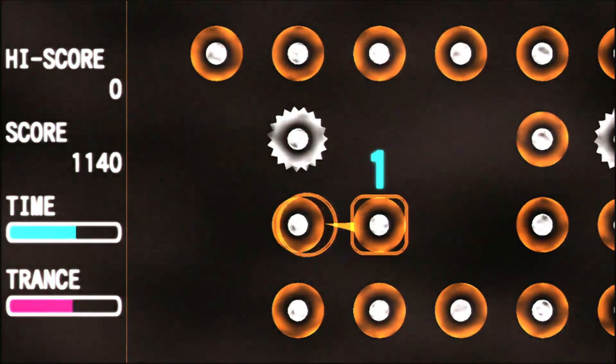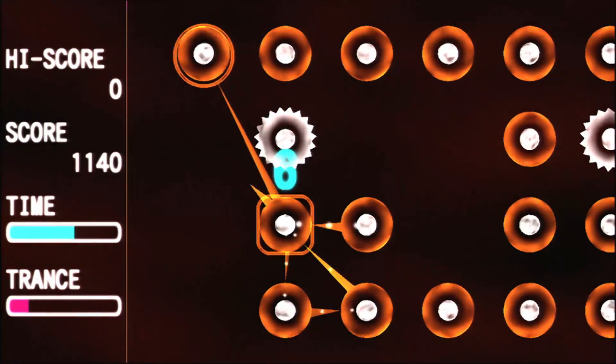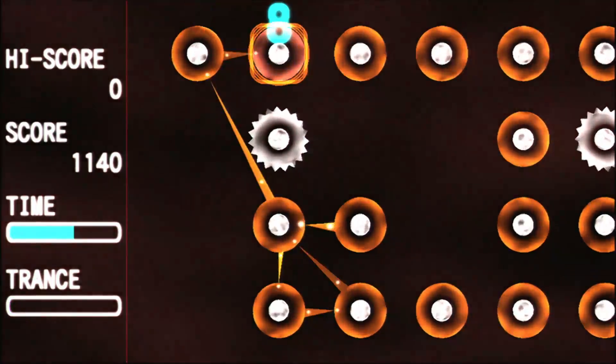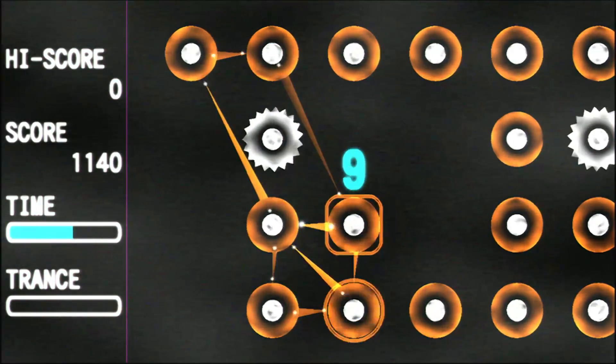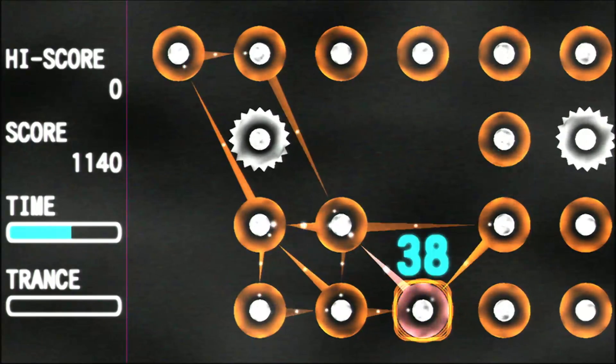What happens when the trance gauge engages? Yep, the entire playfield begins to glow red, and all neurons are considered the same color, allowing you to rack up massive combos.